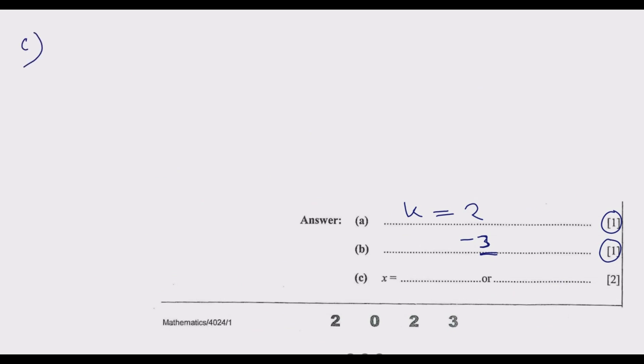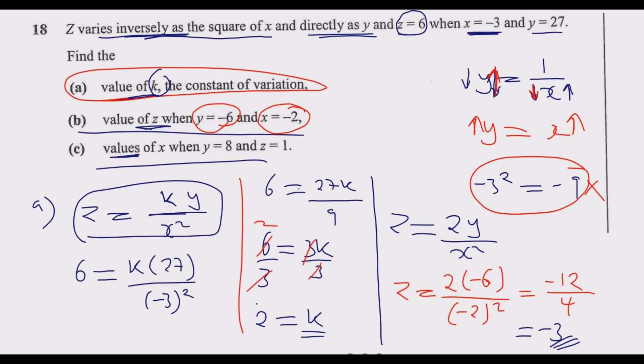Part (c): find the values of x when y equals 8 and z equals 1. We'll use the same equation, but now we're finding the value of x. These are two values.